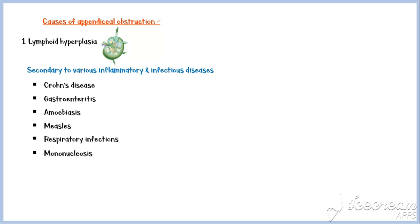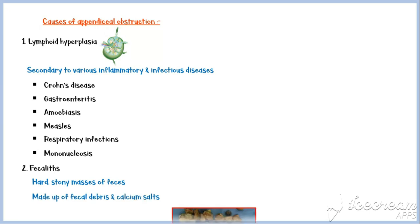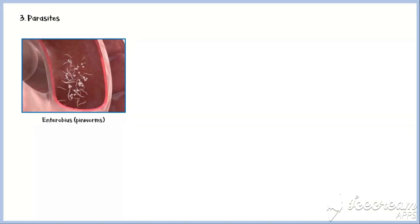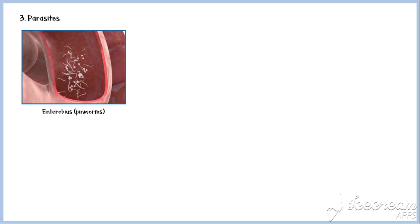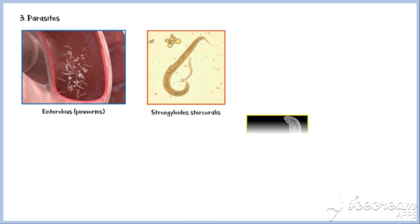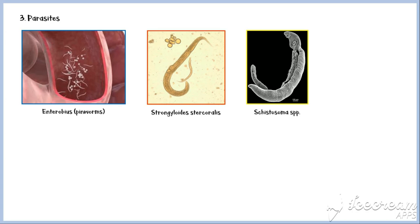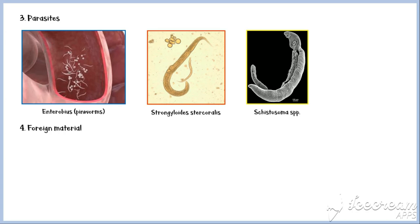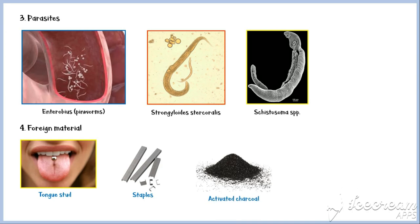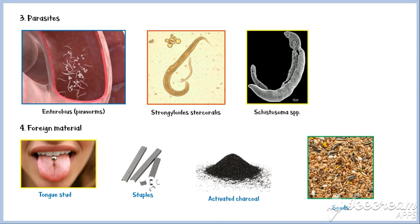Another very common cause of appendiceal obstruction is faecoliths, which are hard, stony masses made up of fecal debris and calcium salts. Certain parasites can also get lodged in the appendiceal lumen and cause obstruction, especially Enterobius, commonly known as pinworms, Strongyloides stercoralis, and Schistosoma species. Occasionally, foreign material such as tongue studs, staples, activated charcoal, and various types of seeds can be ingested and get lodged within the appendiceal lumen, causing obstruction.